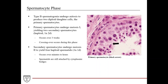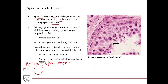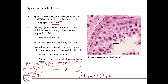The spermatocyte phase begins when Type B spermatogonia undergo mitosis to produce two diploid daughter cells — the primary spermatocytes. These are 2n4d, meaning they have 46 chromosomes and 92 chromatids, because the genetic material is copied during S phase. These primary spermatocytes then undergo meiosis 1 to yield two daughter cells that are haploid — 1n2d, meaning they have 23 chromosomes and 46 chromatids.